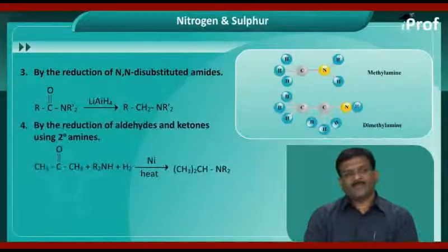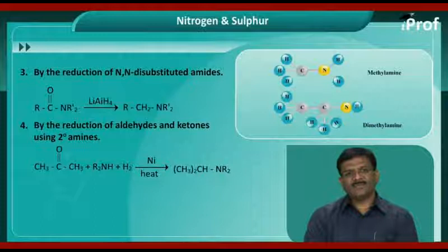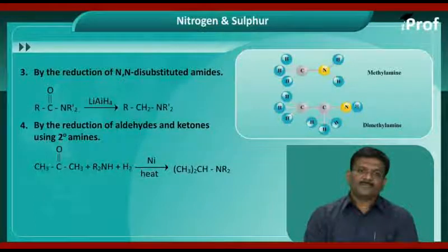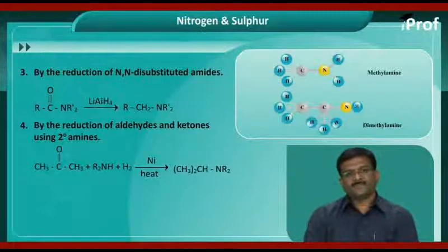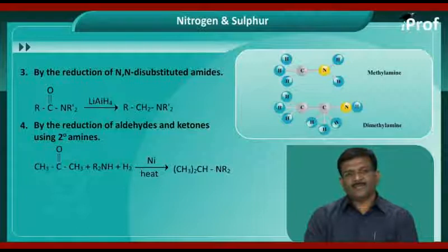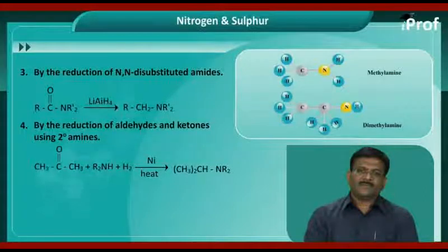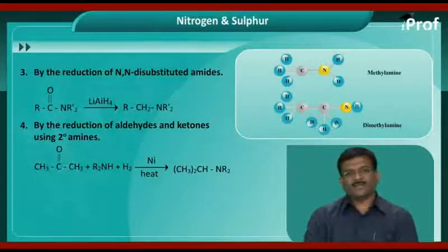Next method: by the reductive amination of aldehydes and ketones using secondary (2°) amines. Ketones on treatment with secondary amines in the presence of hydrogen and on strong heating give the corresponding tertiary amines.